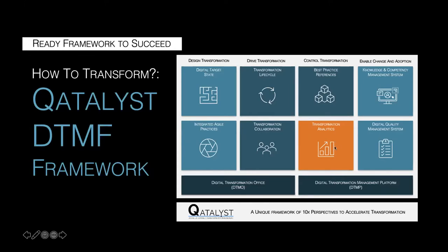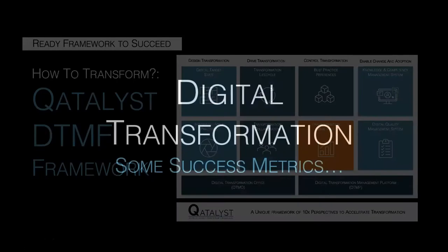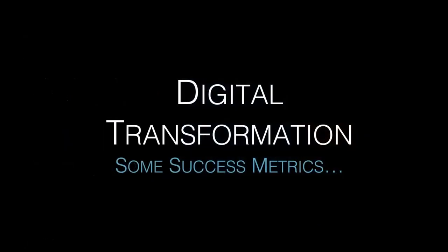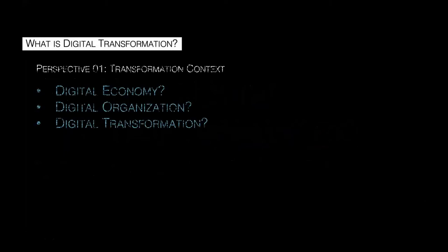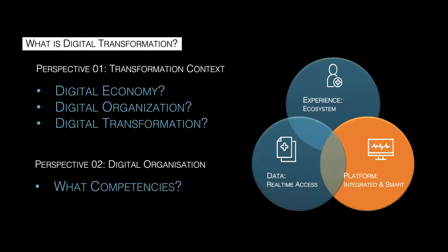Today's focus is on what an organization should be measuring as it undergoes its digital program. How do we know we are indeed becoming a digital organization, and what are the ramifications of this digitalization on our organization's bottom line? The three critical competencies of a digital organization include managing digital experience at the front end, the ability to harvest and leverage data, and delivering business transactions and processes over digital platforms.